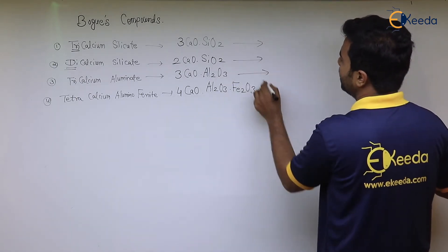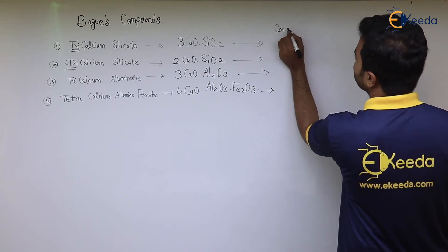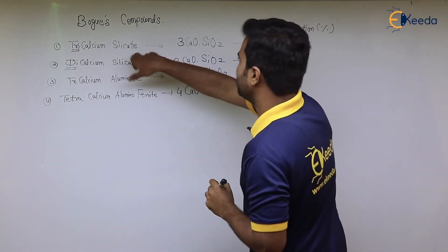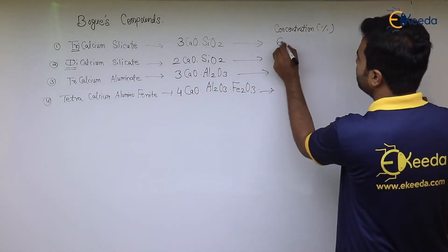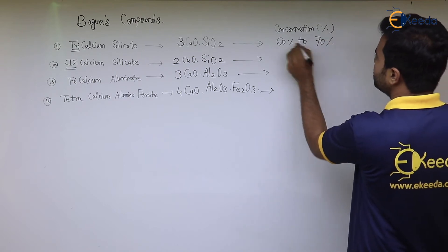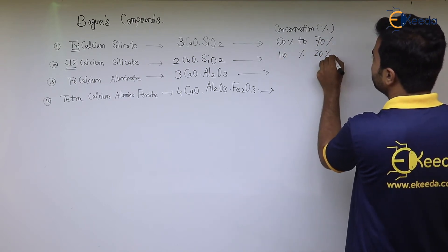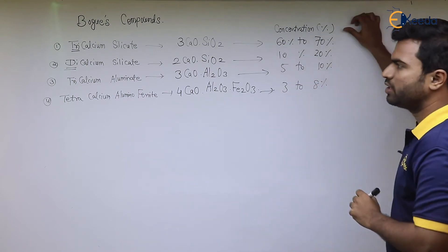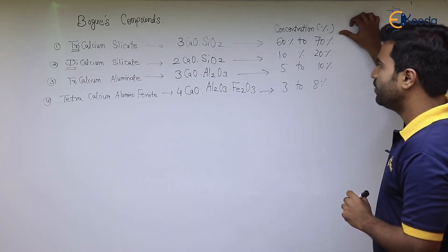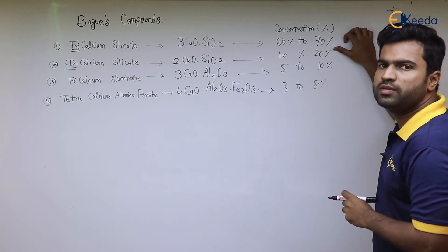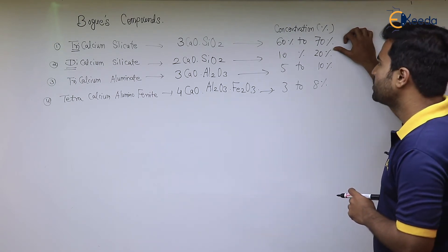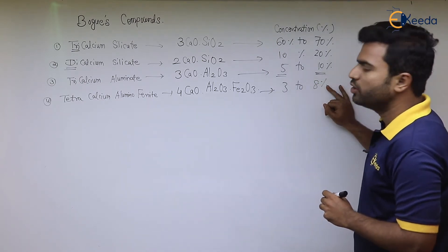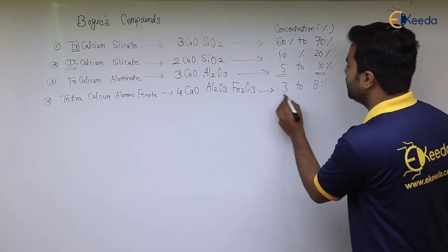Now we will see the percentages in which these compounds are present in cement. Tri-calcium silicate is present at 60 to 70 percent, di-calcium silicate is 10 to 20 percent, tri-calcium aluminate is 5 to 10 percent, and tetra-calcium alumino ferrite (4CaO·Al2O3·Fe2O3) is 3 to 8 percent.